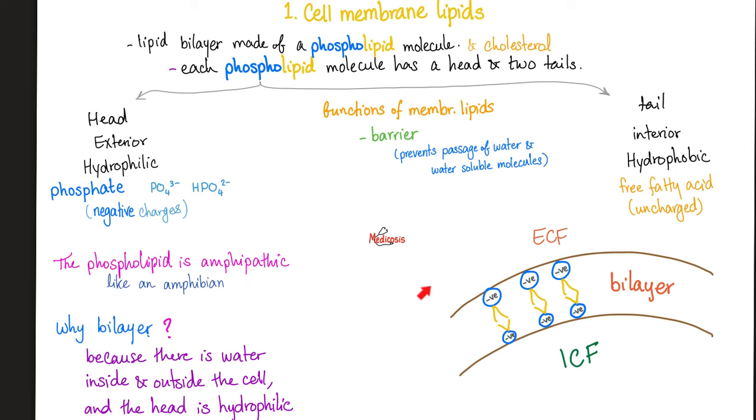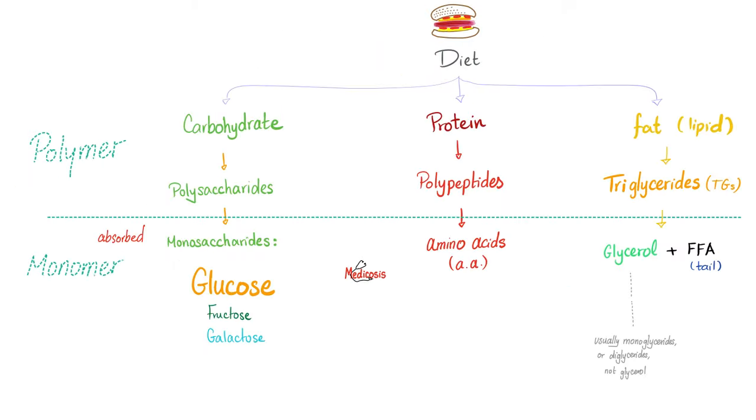And that's why you need a bilayer, because there is water outside and there is water inside. And the fat is always buried in the center. That's why your cell membrane is like an amphibian. It's amphipathic.